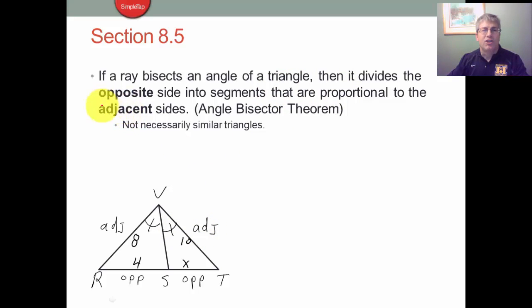Okay, so the adjacent sides means next to the angles, where RS and ST are the sides opposite of our bisected angles. So what this says is that the adjacent side and the opposite sides are proportional.